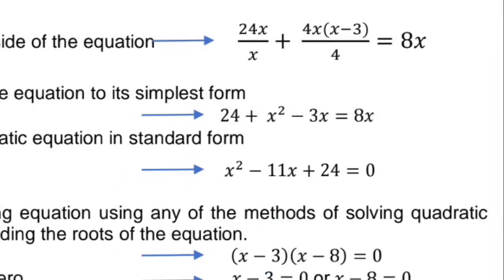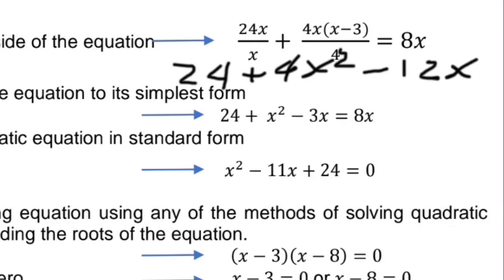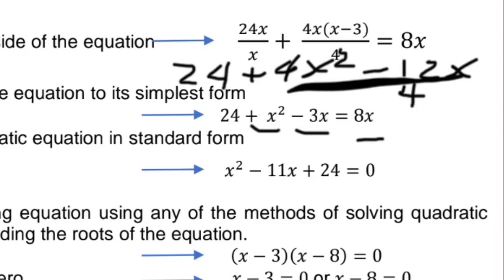24x divided by x is 24. Then 4x times the quantity of x minus 3 over 4: 4x times x is 4x squared, and 4x times negative 3 over 4 is negative 12x over 4. Simplifying: 24 plus 4x squared divided by 4 is x squared, and negative 12x divided by 4 is negative 3x. This equals 8x. Transpose 8x to the left side to get negative 8x. So the quadratic equation is x squared minus 11x plus 24 equals 0.